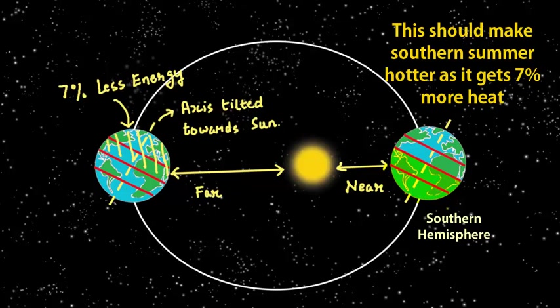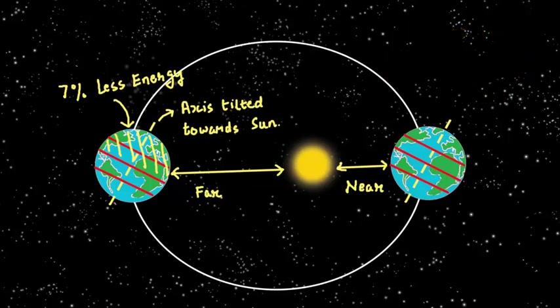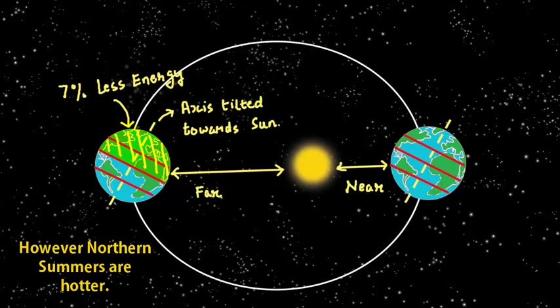So this should mean that the summers in Southern Hemisphere should be hotter because it gets more energy. However, this is not the case. It turns out that the Northern summers are hotter than the Southern summers. Let's see why.